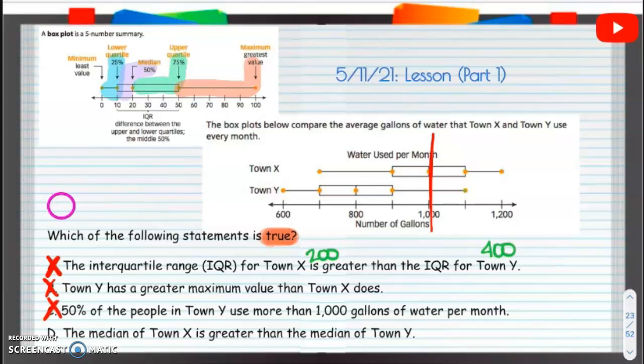Let's take a look at the last one, the median. Median is the middle. So here's the median for town X, here's the median for town Y, so this is 1,000, this is 800.